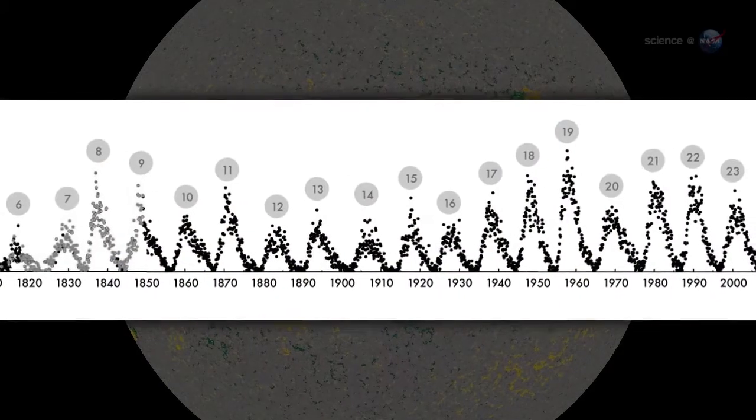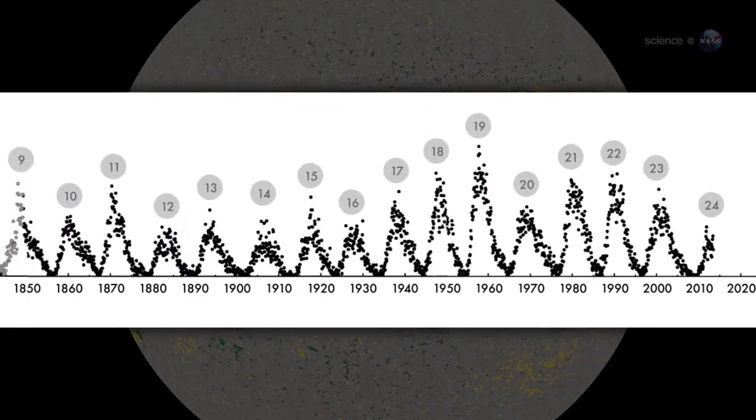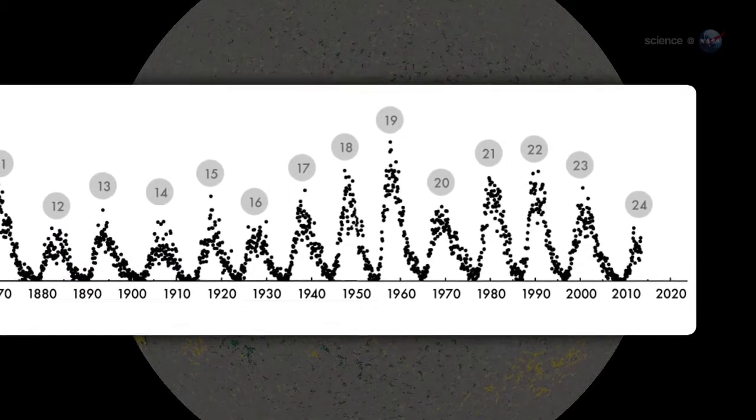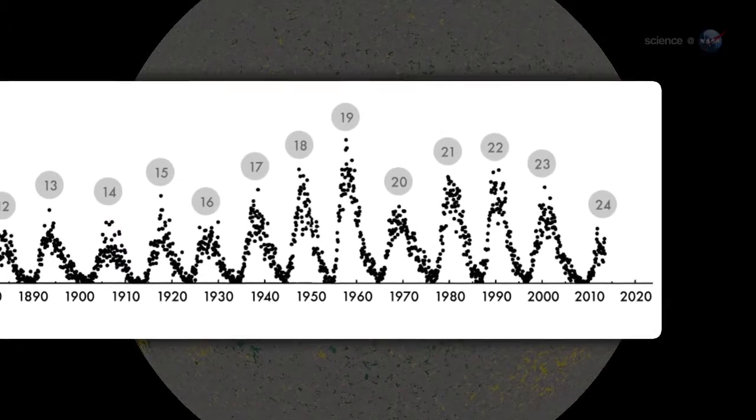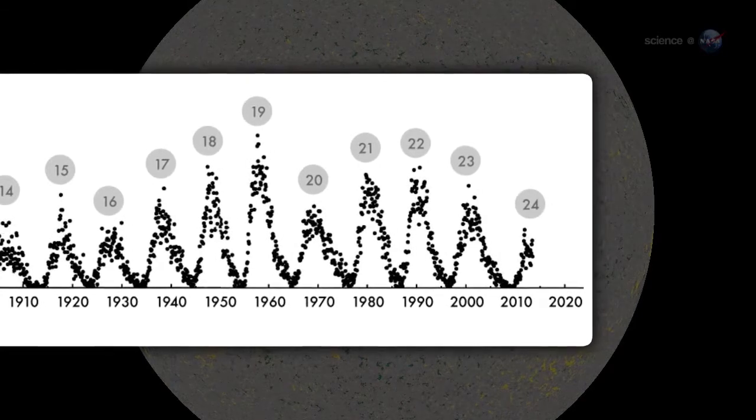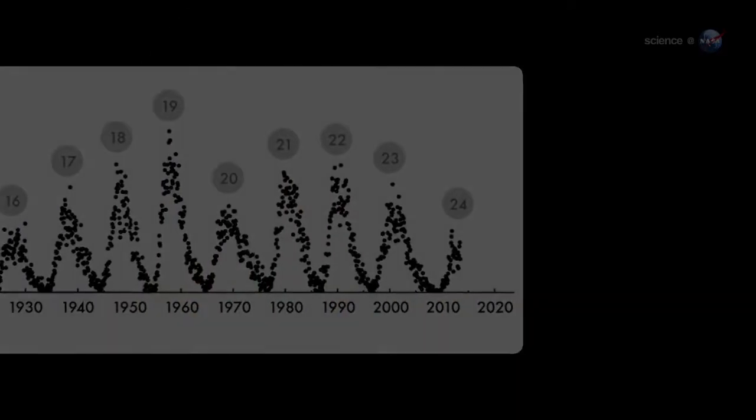The Sun's magnetic field changes polarity approximately every 11 years. It happens at the peak of each solar cycle, as the Sun's inner magnetic dynamo reorganizes itself. The coming reversal will mark the midpoint of solar cycle 24. Half of SolarMax will be behind us, with half yet to come.